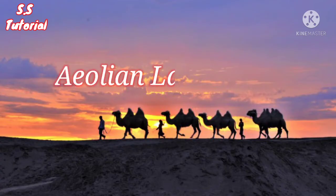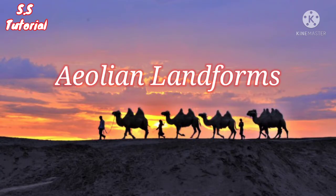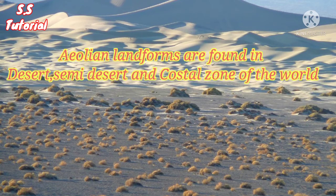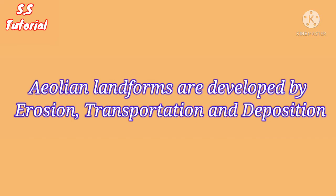Today in this video we will know about Aeolian Landforms, which is one of the most important exogenetic processes which changes earth's topography. The word Aeolian derives from the Greek word Aeolios, which is actually the Greek god of wind. Aeolian Landforms, or landforms made by winds, are found only in desert, semi-desert and in the coastal zone. Aeolian Landforms are developed by the Aeolian process — that is, erosion, transportation and deposition by the wind.